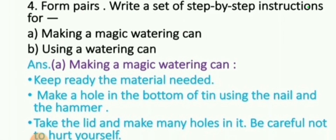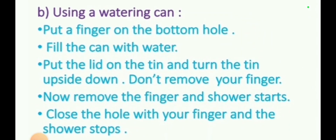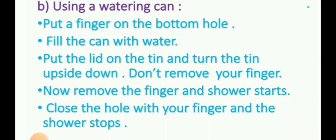Now, step-by-step instructions for using a watering can. Step 1: Put a finger on the bottom hole. Step 2: Fill the can with water, put the lid on the tin, and turn the tin upside down — don't remove your finger. Step 3: Now remove the finger and the shower starts. Close the hole with your finger and the shower stops.